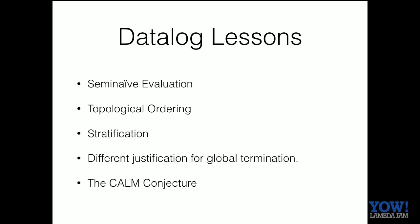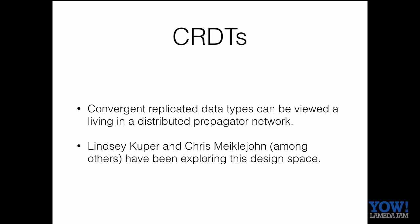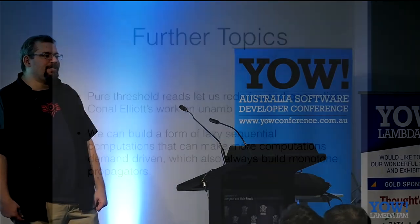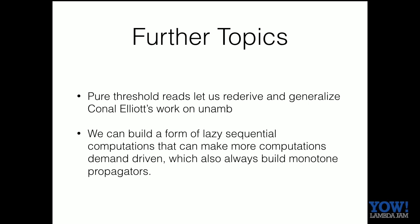We learned a bunch of things from datalog, and I'm basically out of time. Convergent replicated data types fit into this model; commutative replicated data types can be made to fit with the relaxations discussed earlier. Using threshold reads lets us re-derive all the work on unamb, and makes it so that every one of these propagator solutions we can build don't get buried in a par monad but can look like more pure functions. They let us write every function in Haskell as monotone, but also write more of those monotone functions that are not directly expressible — things that are admissible under that requirement but not expressible in the language that we have.